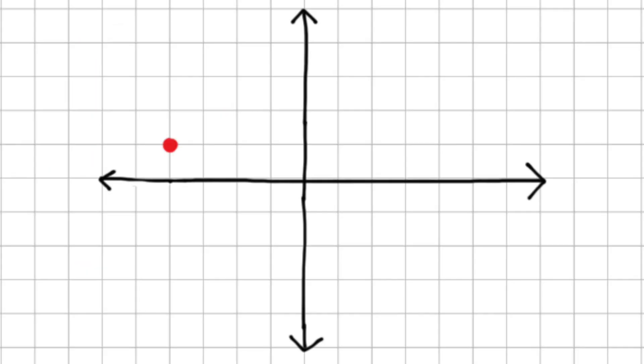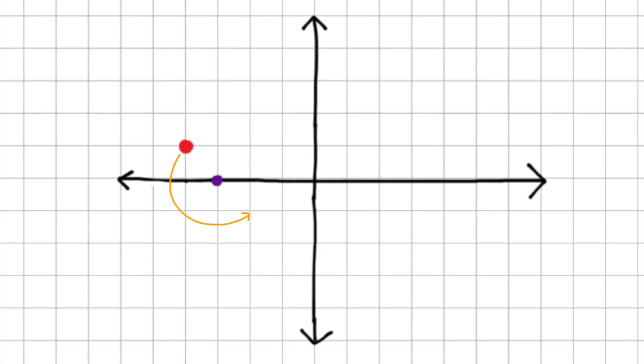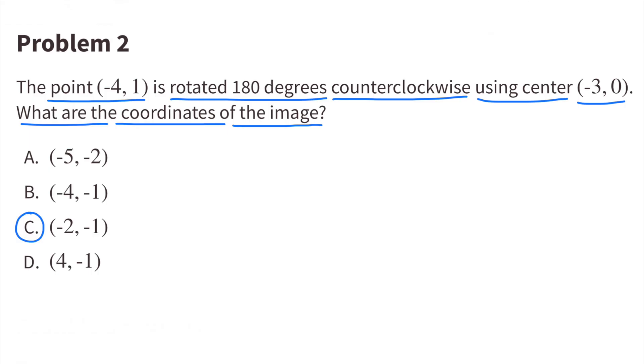This red point has the coordinates negative 4 and 1. And this purple point has the coordinates negative 3 and 0. Rotating 180 degrees counterclockwise using the purple point as the center, the new coordinate would be negative 2 and negative 1. After the rotation, the point would have the new coordinates negative 2 and negative 1. So the answer would be C.